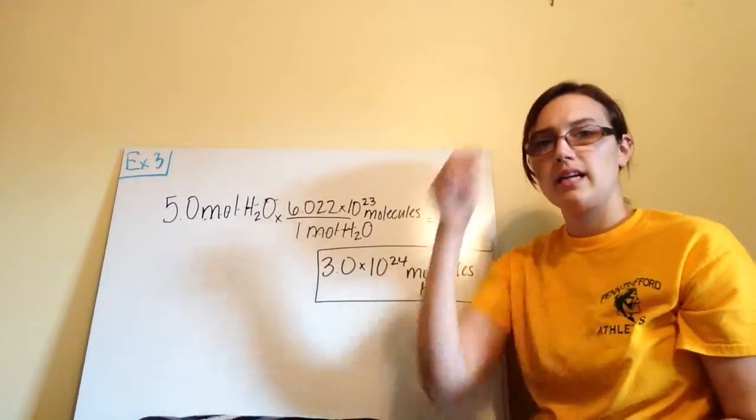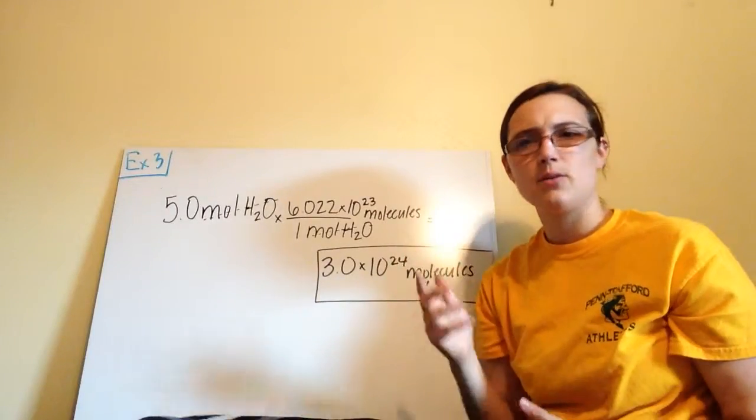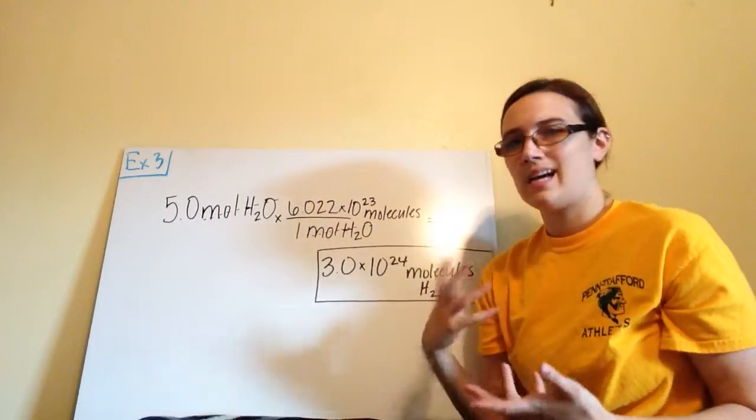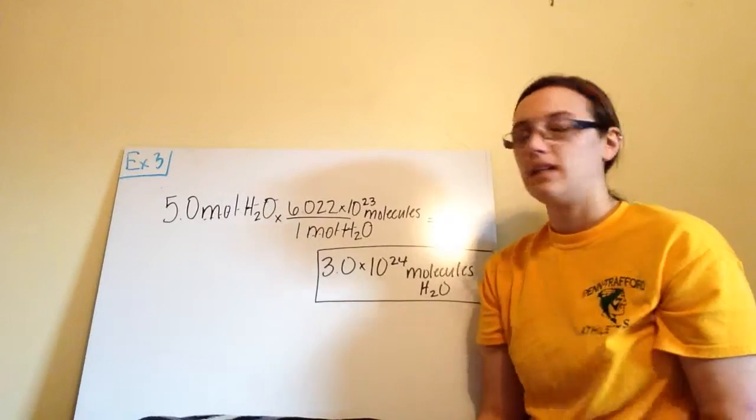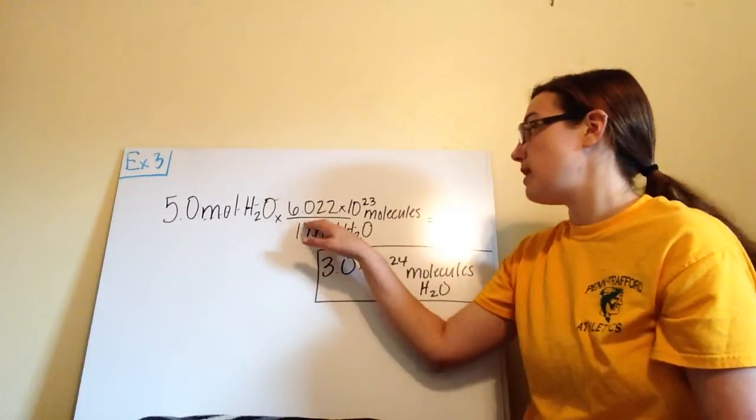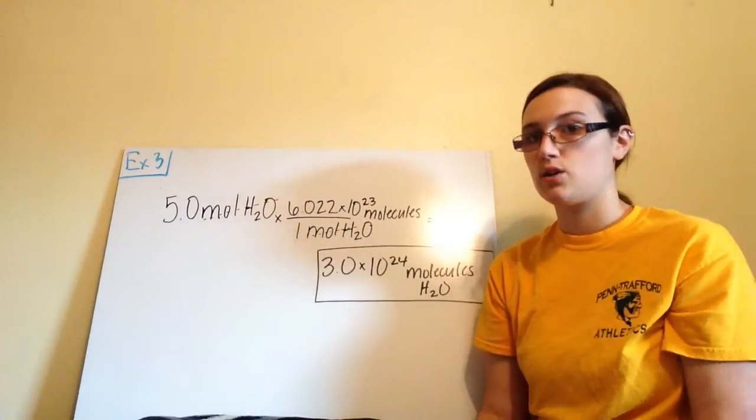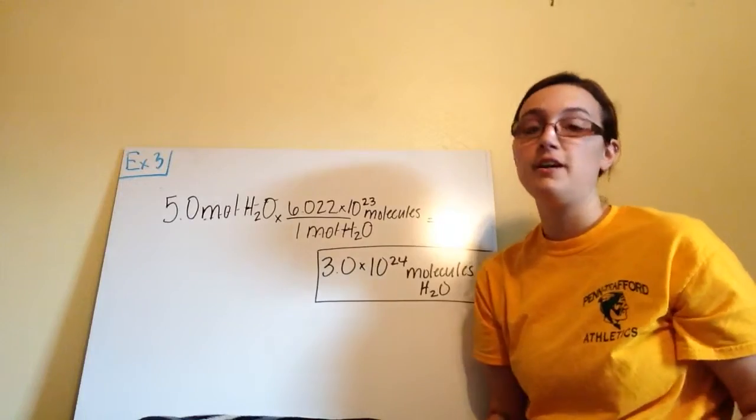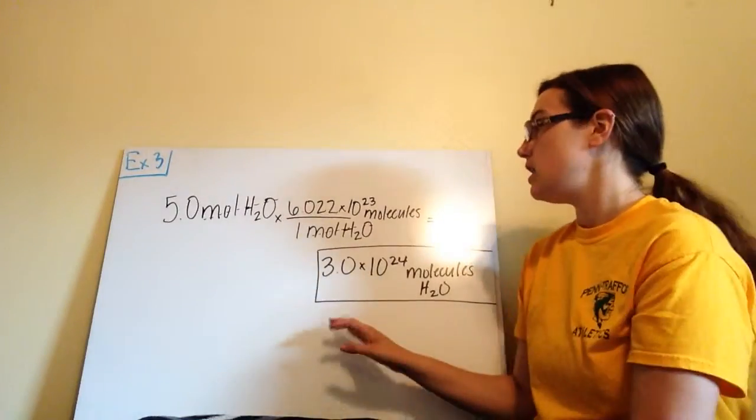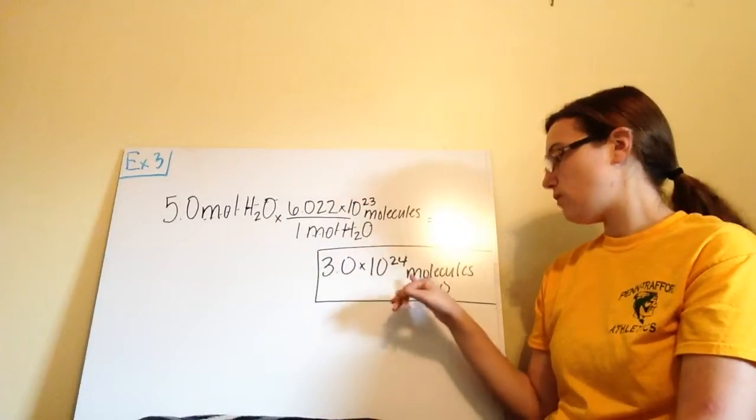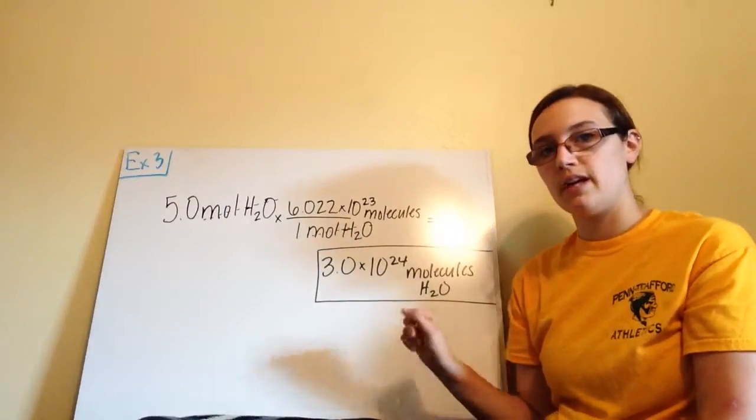Now, you also might be looking at this saying, well, last year we used 6.02 times 10 to the 23rd. Does that second 2 really make a difference? The answer is yes. From now on, this is Avogadro's number, 6.022 times 10 to the 23rd. More significant figures, more precise. So when you multiply everything out, 3.0 times 10 to the 24th molecules of H2O.